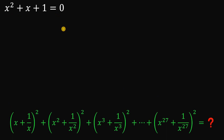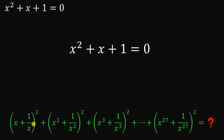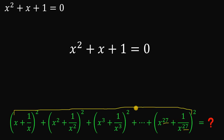To answer this kind of question, we're going to use the given equation x² + x + 1 = 0, and find the value of (x + 1/x)² + (x² + 1/x²)² all the way to (x²⁷ + 1/x²⁷)². We have 27 terms here. Before solving, notice that x is not equal to 0, because if you replace all x with 0 we get 1 ≠ 0, so 0 is not part of the solution.